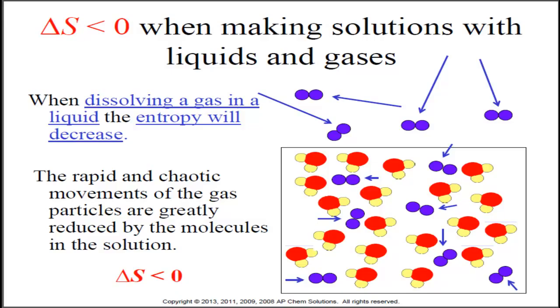Notice that the arrows here, those are velocity vectors. When you have gas-gas solutions, you dissolve a gas in another gas, the entropy is going to increase due to the random mixing of different molecules.